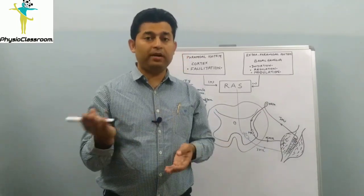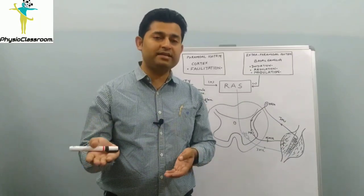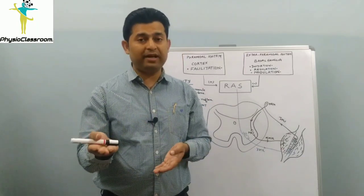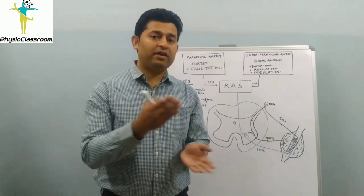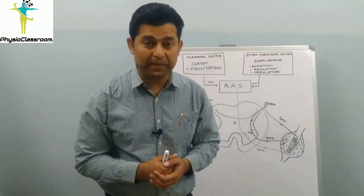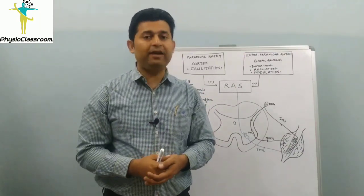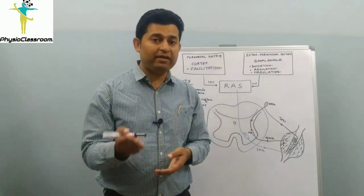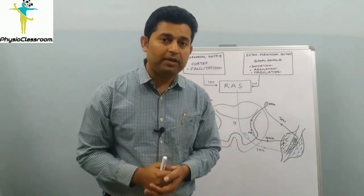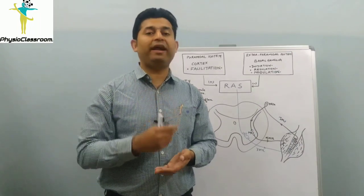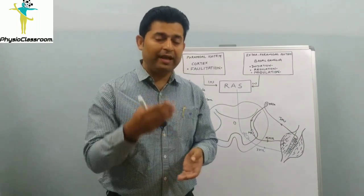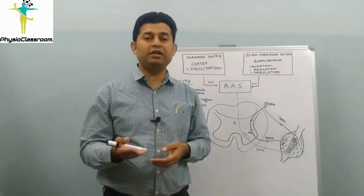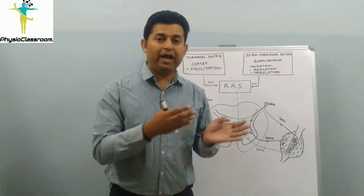Upper motor neuron lesions can be further classified into three main types. For example, in extrapyramidal disorders like Parkinson's disease, we do not see spasticity — instead we see rigidity manifesting in the patient. Similarly, in cerebellar disorders and pure cortical strokes, the patient has relatively less hypertonia.